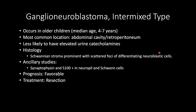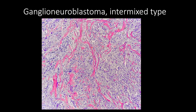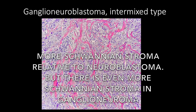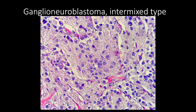Ganglioneuroblastoma intermixed type occurs in older children; median age is 4 to 7 years. The most common location is the abdominal cavity or retroperitoneum. You're less likely to have elevated urine catecholamines than those who have neuroblastoma. Histology shows prominent Schwannian stroma with scattered foci of differentiating neuroblastic cells. You can get synaptophysin and S100, which will be positive in the neuropil and Schwann cells. Prognosis is favorable and treatment is resection. Here is a low-power view showing abundant Schwannian stroma with differentiating neuroblasts embedded within it, some with prominent nucleolus and some with salt and pepper chromatin, all in a nested architecture.